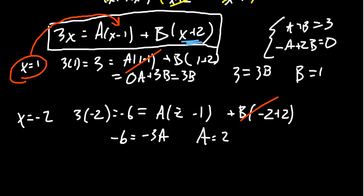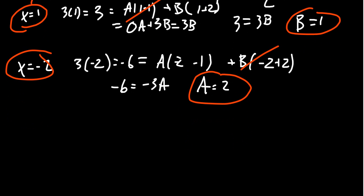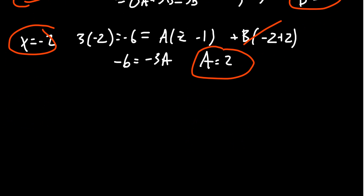And so using these cool values of x, that is these ones that annihilate, we figured out that B is 1 and A is 2 pretty quickly without any system of equations. That's kind of a nice alternative. Lots of students, I think, really prefer this method of annihilation as opposed to the systems of equations.